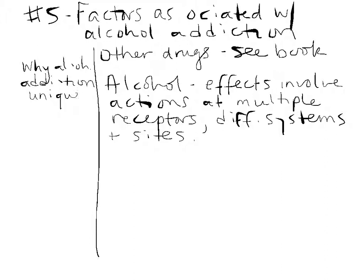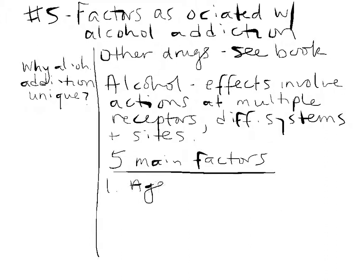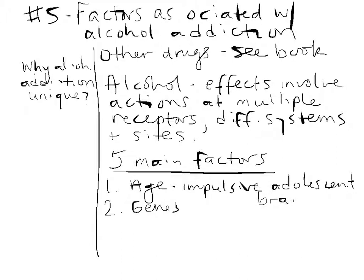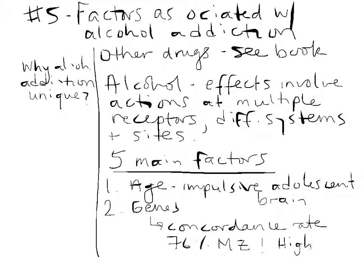We have identified five major factors related to the development of alcohol addiction. The first two — age and genes — are the disease model, basically. Age can be a factor because the adolescent brain is more impulsive, putting you at higher risk for becoming addicted to any drug. Looking at the concordance rate for twins, it's high in general: 76% for monozygotic twins and 61% for dizygotic twins. That means if you are an identical twin and you have an alcohol addiction, there's a 76% chance your twin will as well — that's very high.